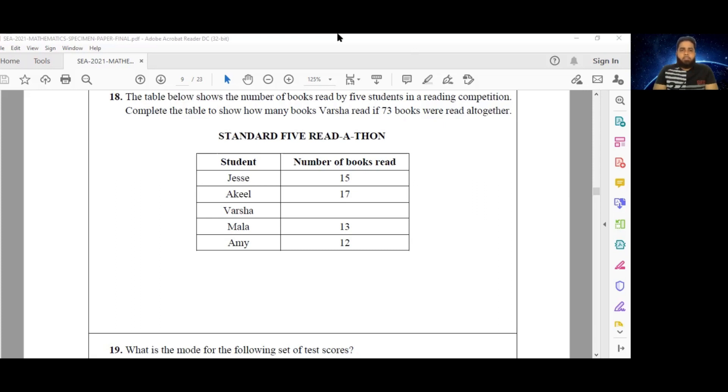So basically, if we sum those four students, the number of books that they read, we are going to get the number that we'll have to subtract from 73 to get the missing number of books, which would be those that were read by Basha. So we'll add 15, 17, 13, and 12. Okay, so that's going to give me 32 plus 25, which is 57.